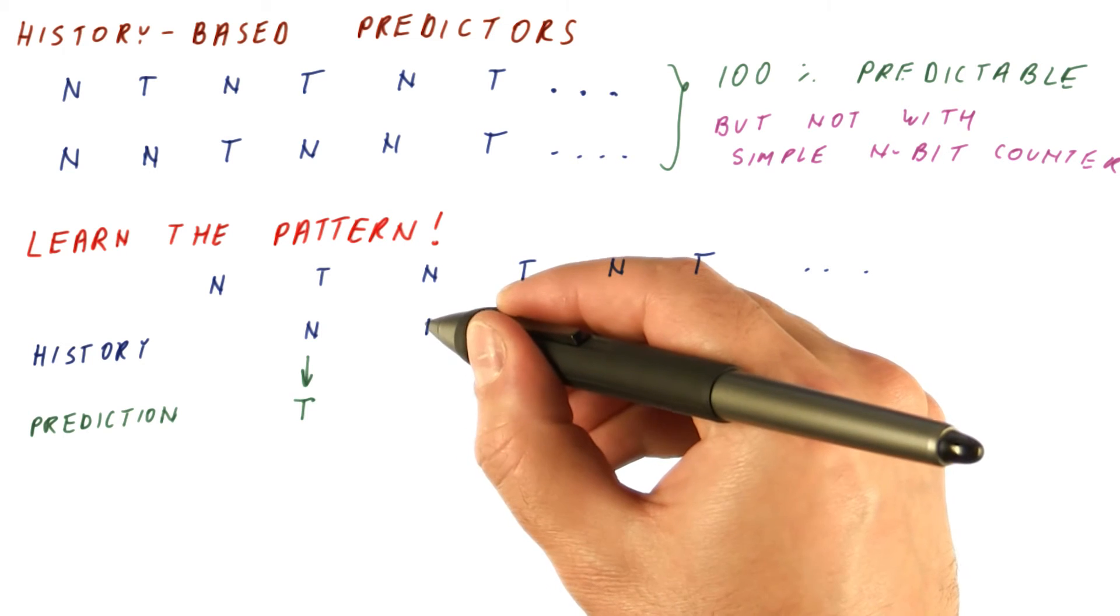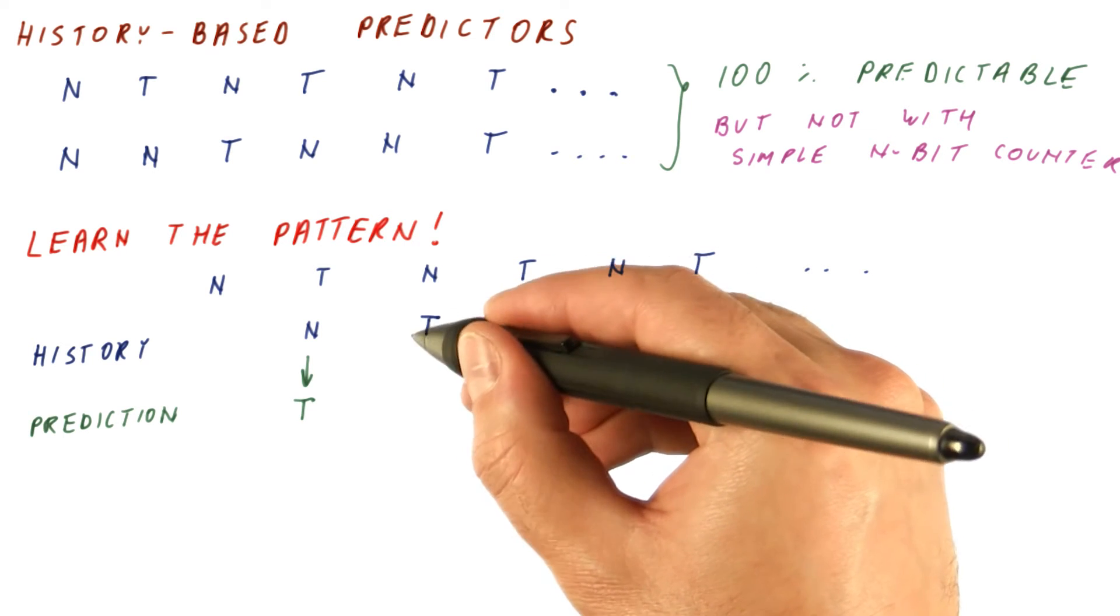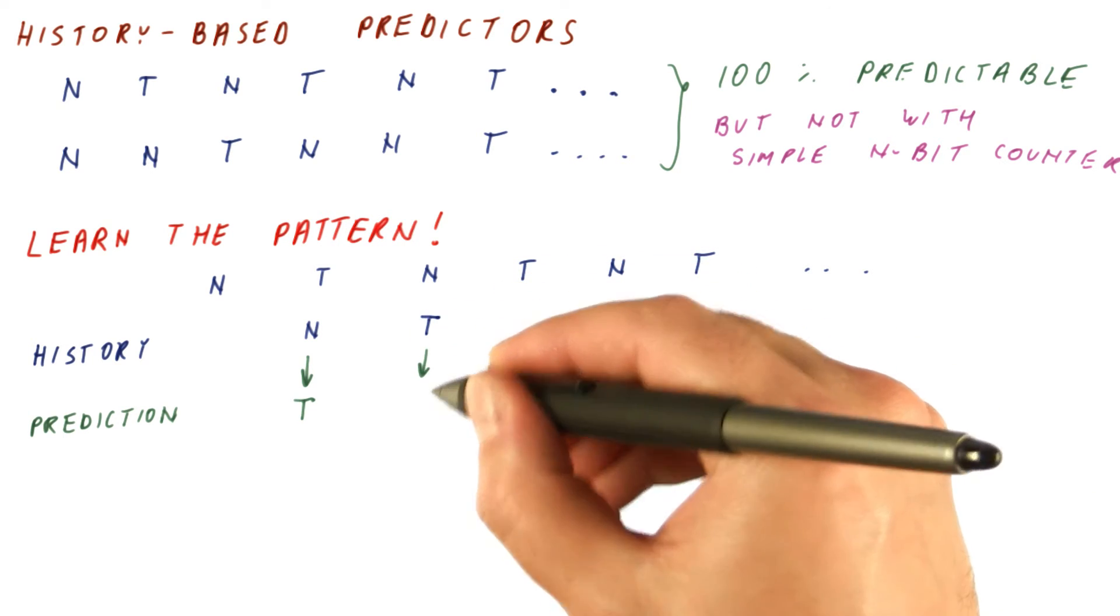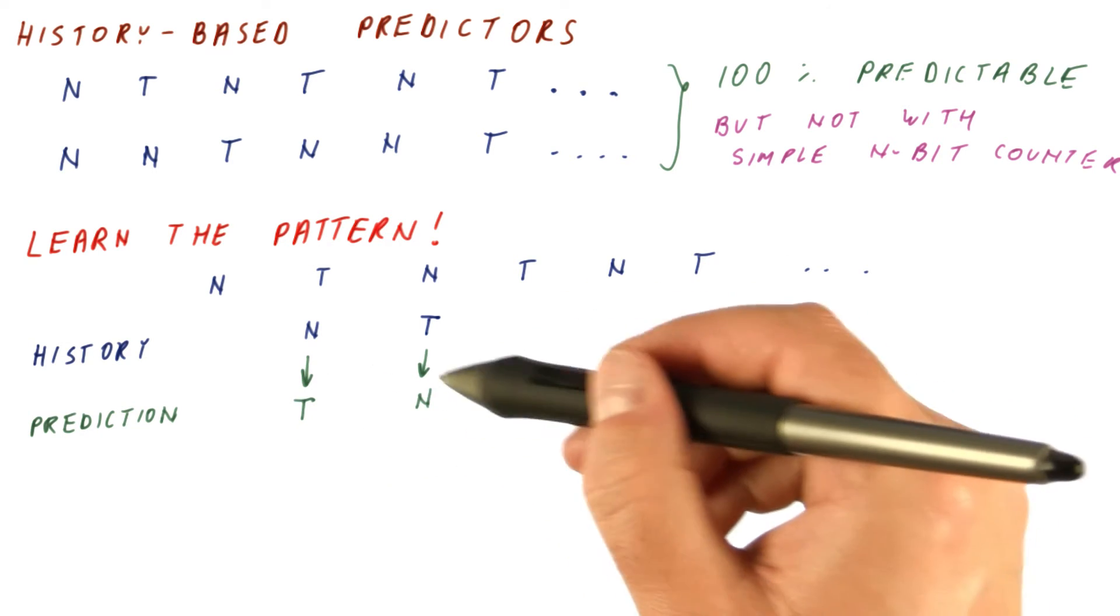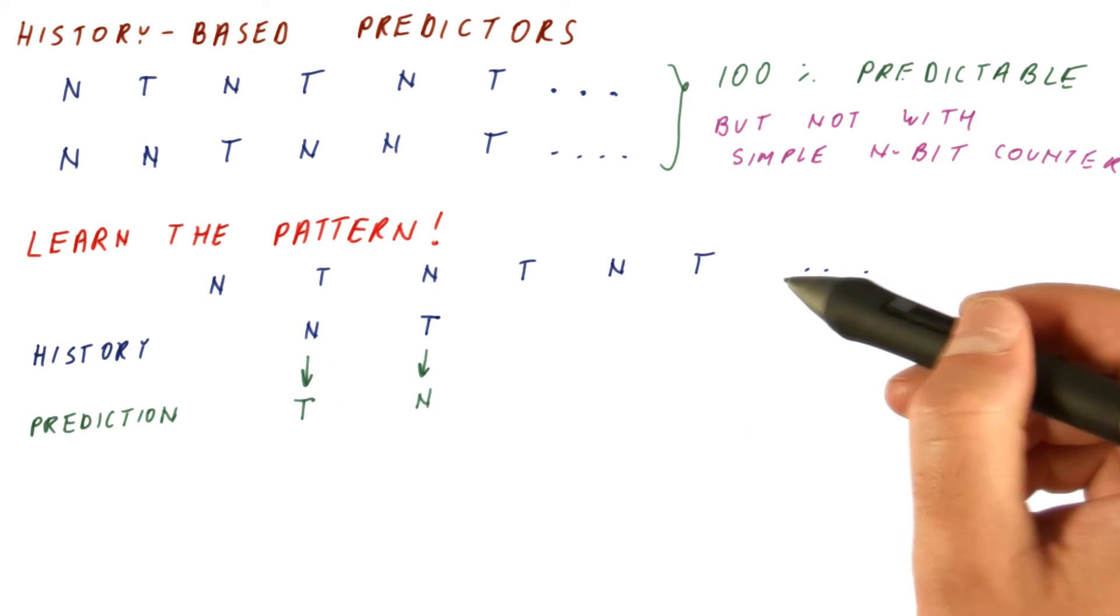And then here, the history says the branch previously was taken. So our prediction should be not taken. And if you're doing it this way, then you will be predicting correctly every single time.